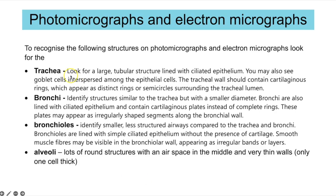You could be asked to identify these structures on a photomicrograph or electron micrograph. For the trachea, you're looking for a large tubular structure lined with ciliated epithelium — you might be able to see those hair-like structures coming out of the cells on an electron micrograph. You might also see goblet cells interspersed amongst epithelial cells, which appear almost like an indent into the cell where mucus is being produced.